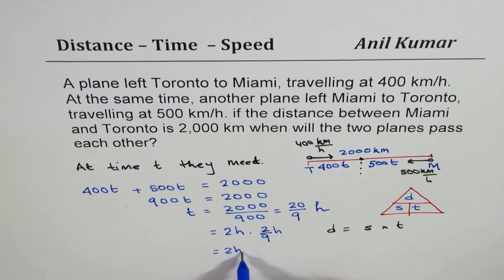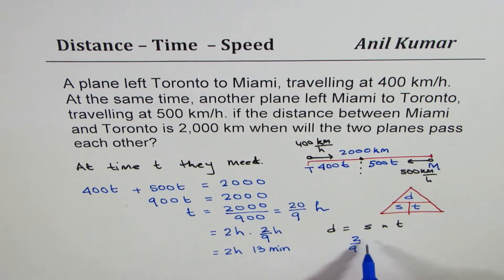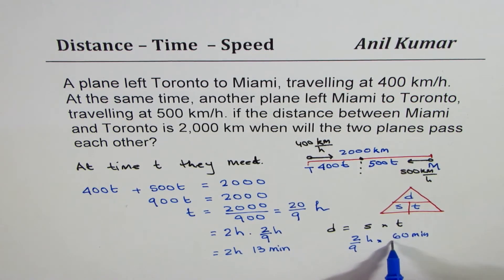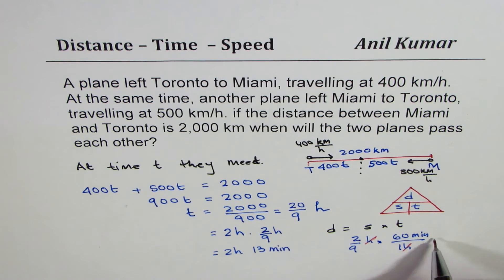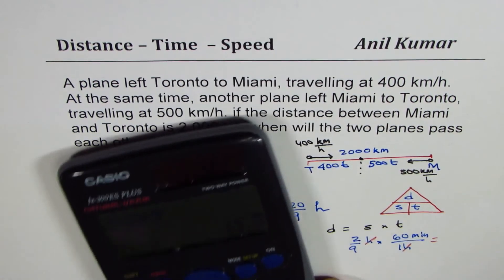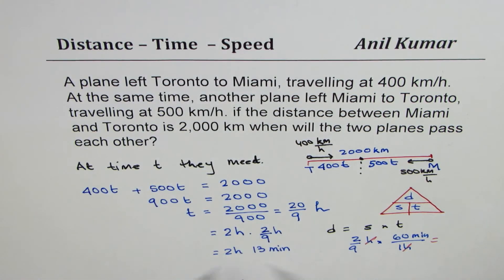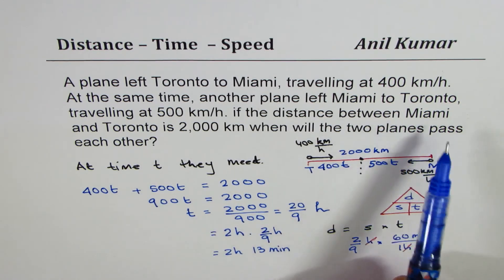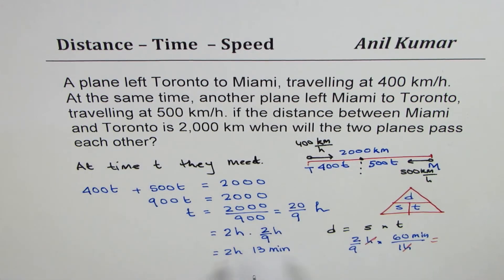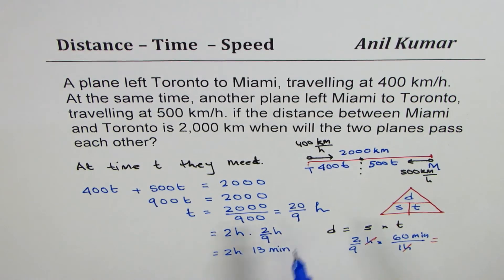So we write this as 2 hours and 13 minutes. How did we get 13 minutes? 2 over 9 hours multiplied by 60 minutes per hour — the hours cancel and you get time in minutes: 2 times 60 divided by 9 is 13.33, which I have written as 13 minutes. So the two planes will cross each other after 2 hours and 13 minutes.